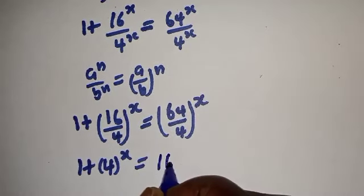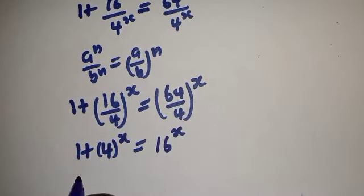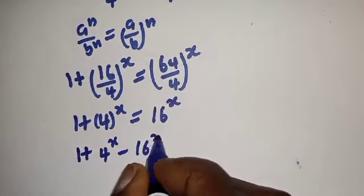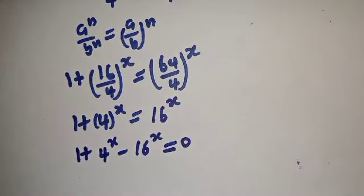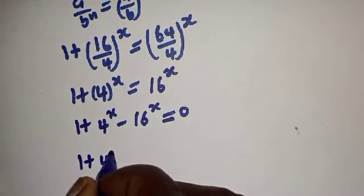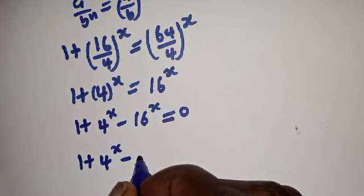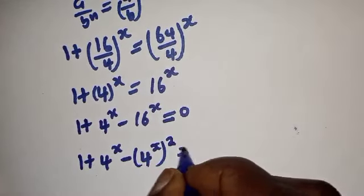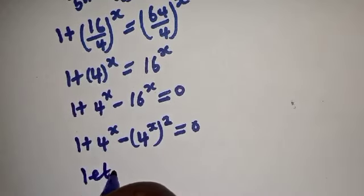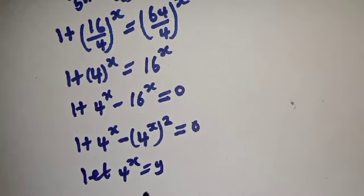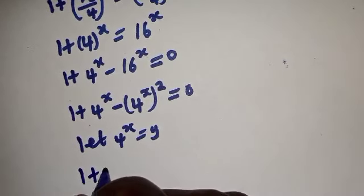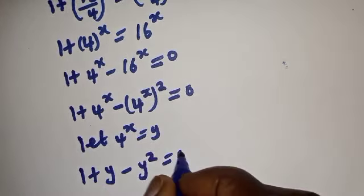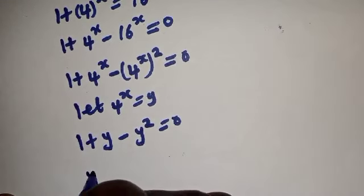So 1 plus 4 to the power of s minus 16 raised to power s is equal to 0. Since 16 = 4², this is 1 plus 4 to the power of s minus (4 to the power of s) squared is equal to 0. Now let 4 to the power of s equal y.